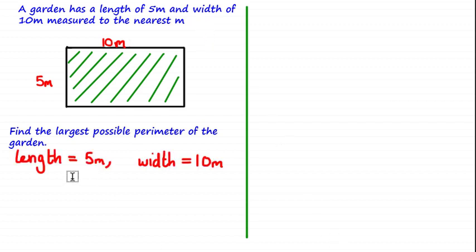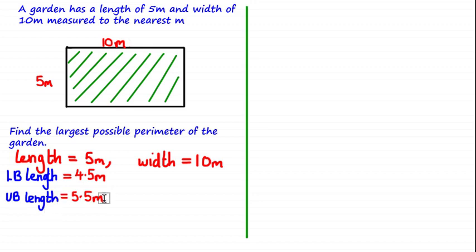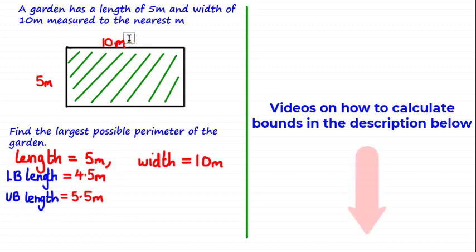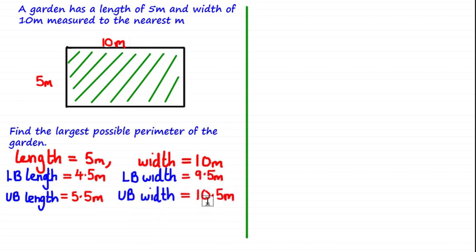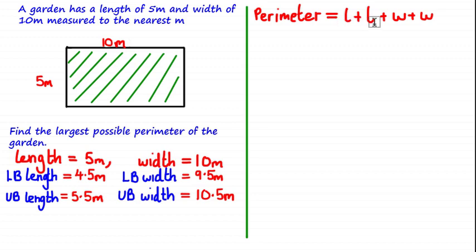Using the fact that the length has been rounded to five meters, we can calculate the lower bound, which is equal to 4.5 meters, and the upper bound, which is equal to 5.5 meters — always remembering the degree of accuracy, which in this case is the nearest one meter. We can also calculate the lower bound of the width, which is equal to 9.5 meters, and the upper bound of the width, which is equal to 10.5 meters.